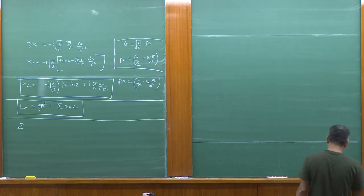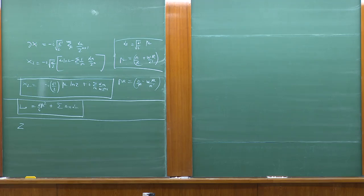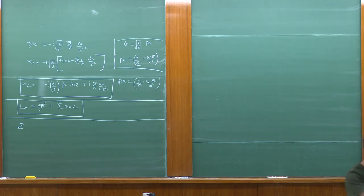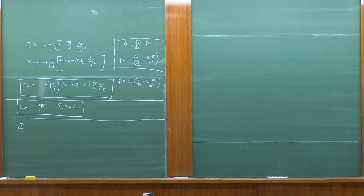T-duality really becomes useful when you think of it in space-time. If you're in a situation where you've got a very small circle, you can analyze string theory exactly there if you know how to solve it. But by doing T-duality, you relate this to some very large circle. Suppose you're interested in low-energy physics — you know that low-energy physics is governed by Einstein's equations on this very large thing. You can relate unfamiliar physics to familiar physics.